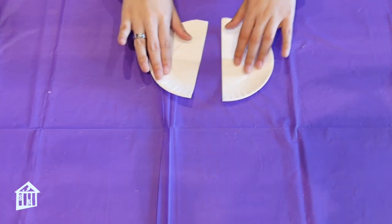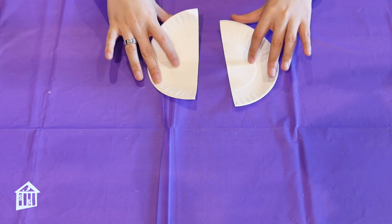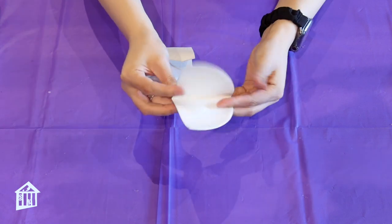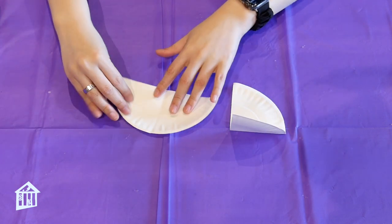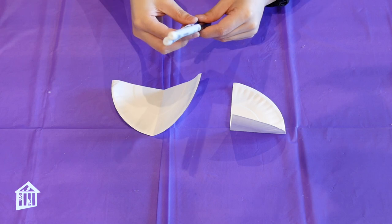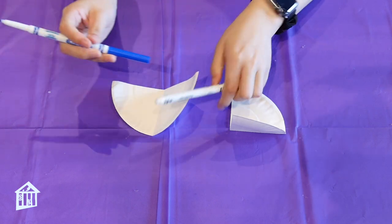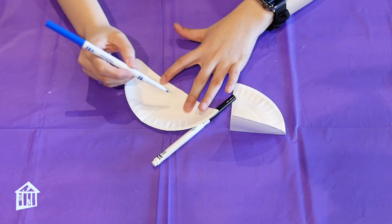First you need to cut your paper plate in half. Next I'm gonna fold it in half each piece. Once that's done you're gonna let your toddler, your little one, draw some water droplets on each side of the plate.